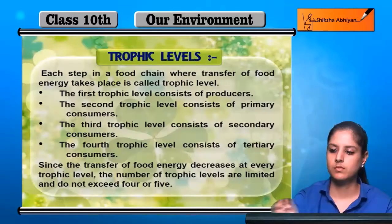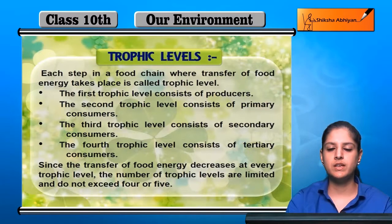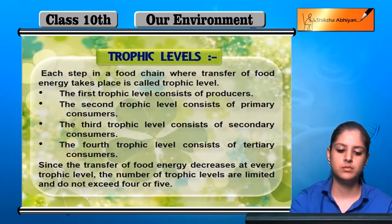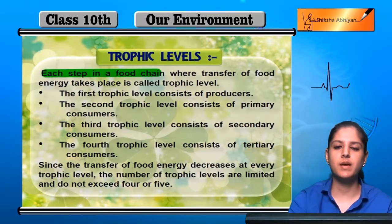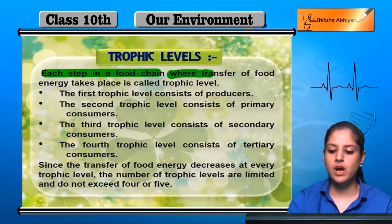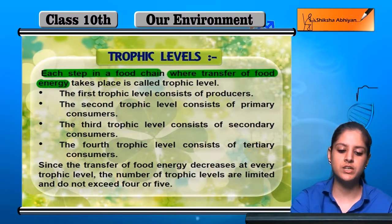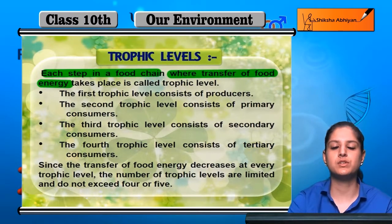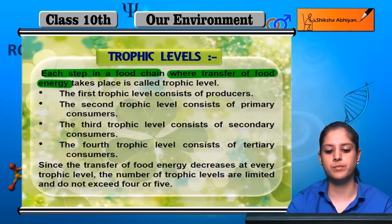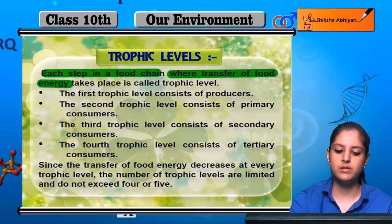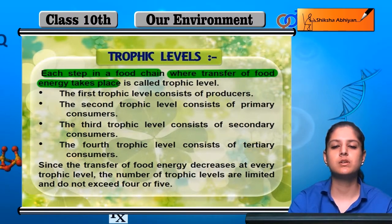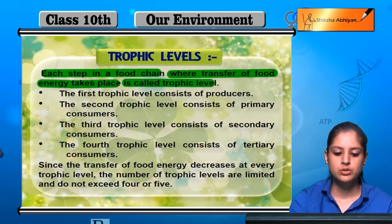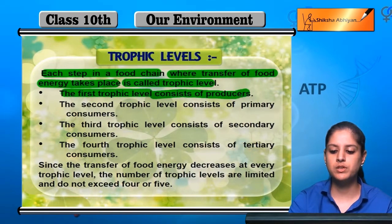Now coming to the next topic: trophic levels. We have discussed the food chain, and at every step of the food chain, food energy is transferred. If someone is feeding on someone, that means food energy is transferred. Every step in which food energy is transferred is called a trophic level. The first trophic level is always producers.